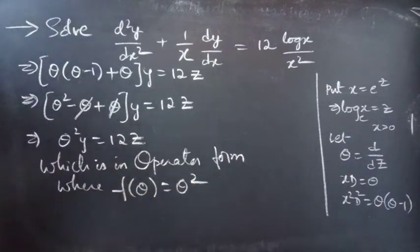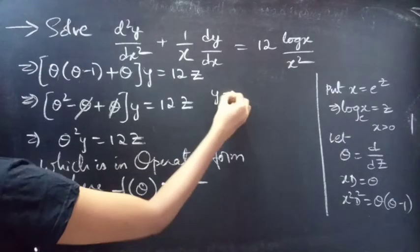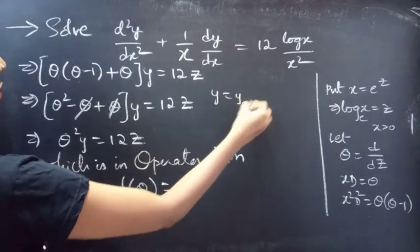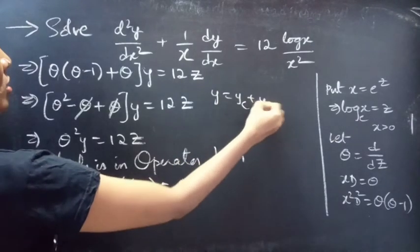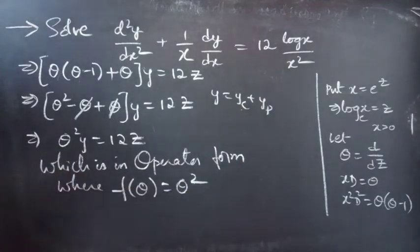Now we need to find the general solution to the given equation, which is given by y = yc + yp. So let's find yc and yp.